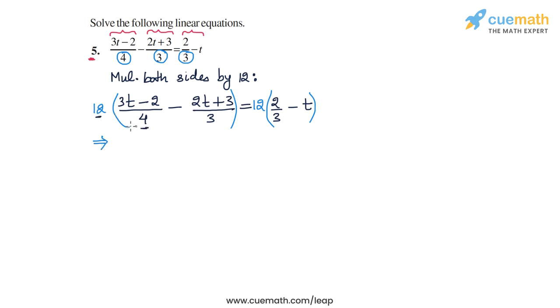We have 12 times this term, so 12 by 4 is 3, so we will get 3 times 3t minus 2, and then we have 12 into minus 2t plus 3 by 3. Now 12 by 3 is 4, so we will get minus 4 times 2t plus 3.